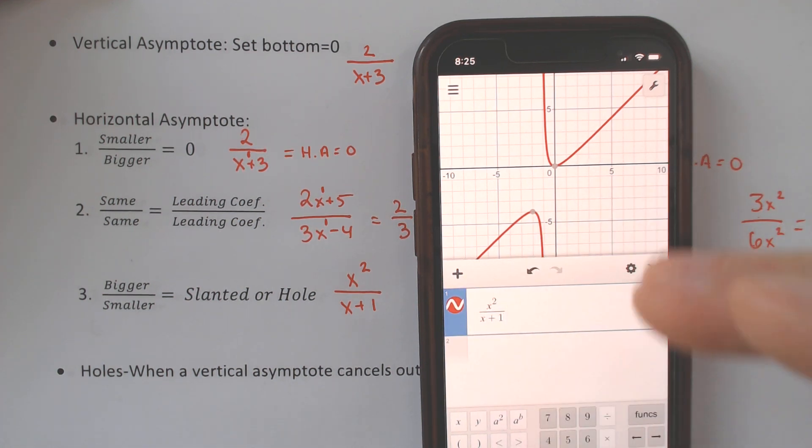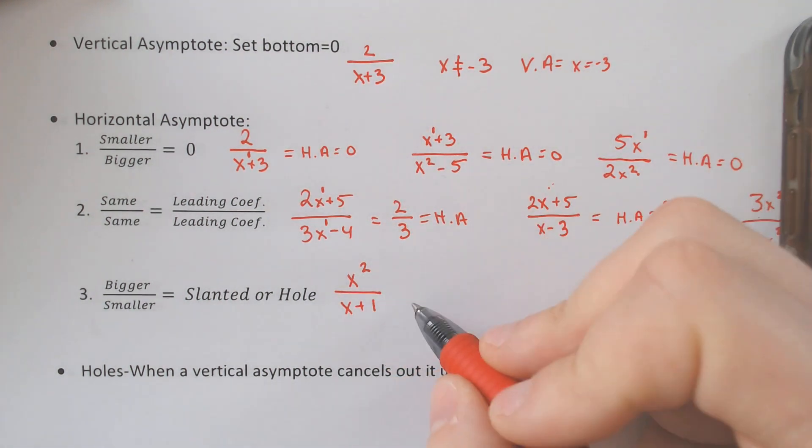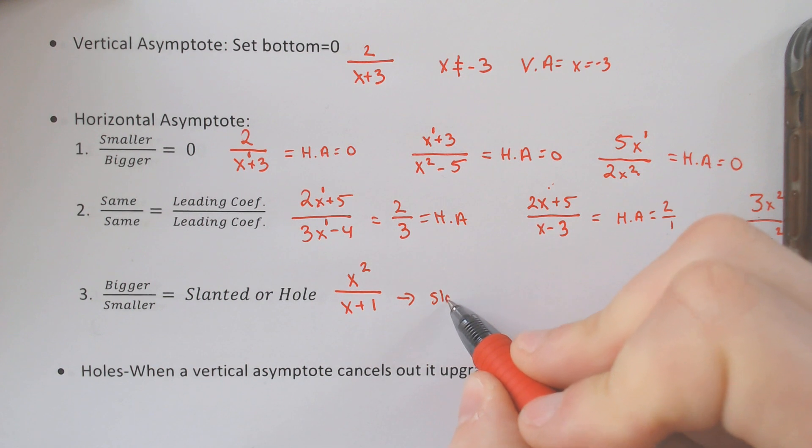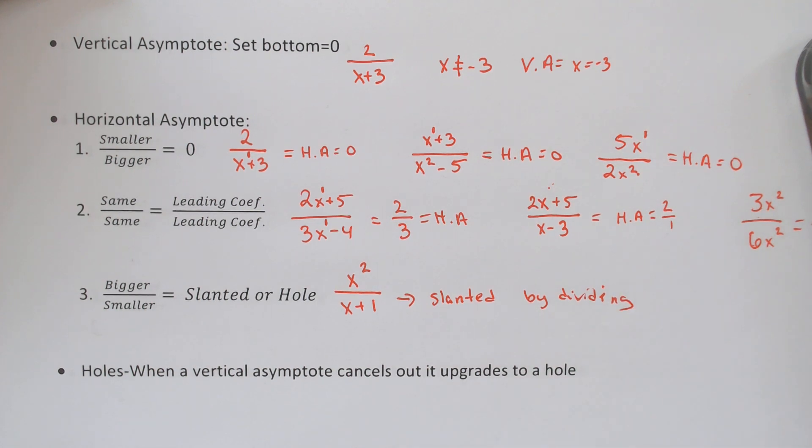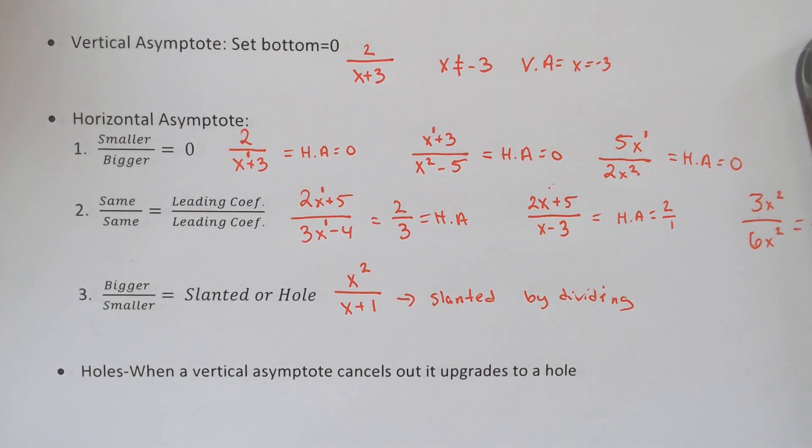That is what it's doing there. We have another video where I'm going to go over how to get the slanted asymptote, but the point here is that this would be a slanted asymptote. You would get it by dividing, okay? You can get it by dividing, using synthetic division, or polynomial long division. That's how you get them, all right?